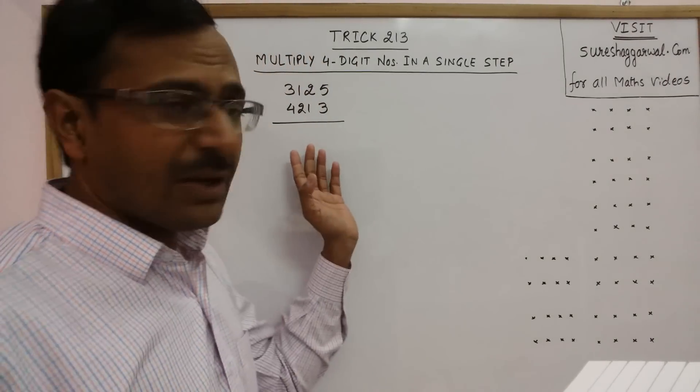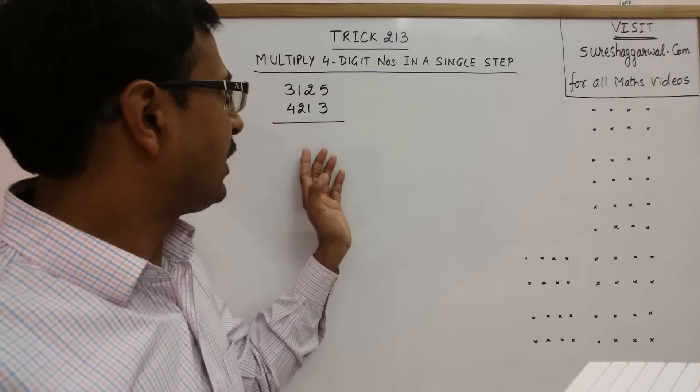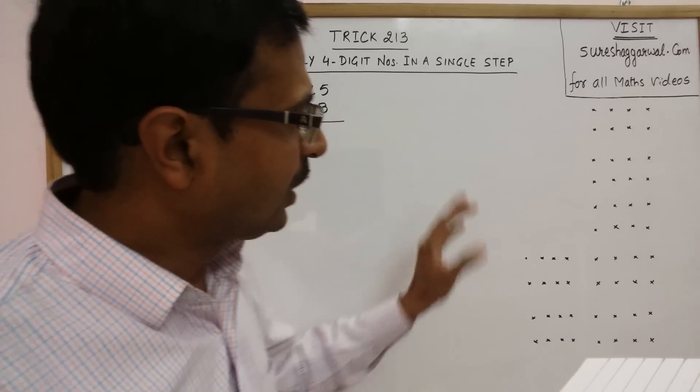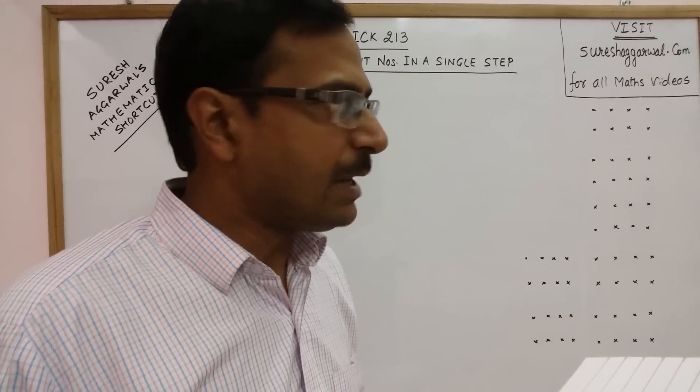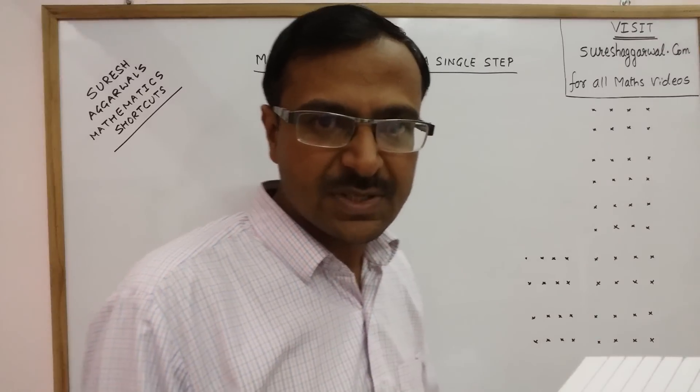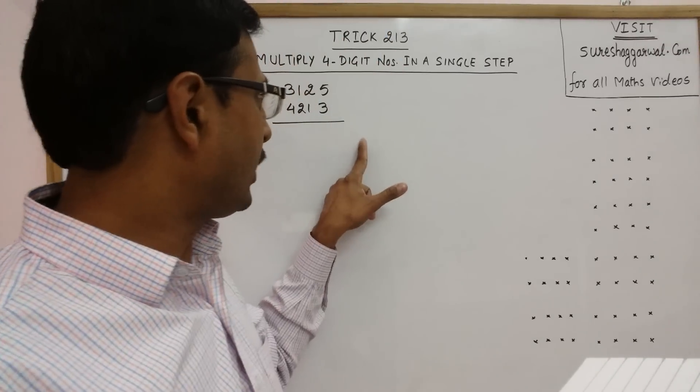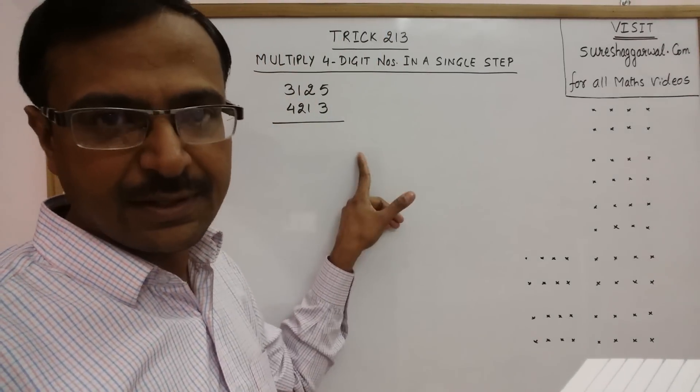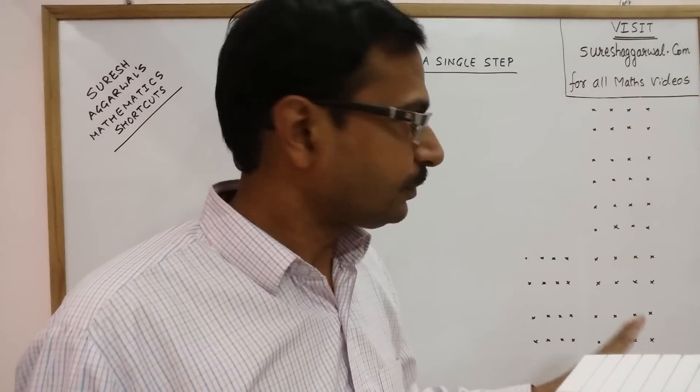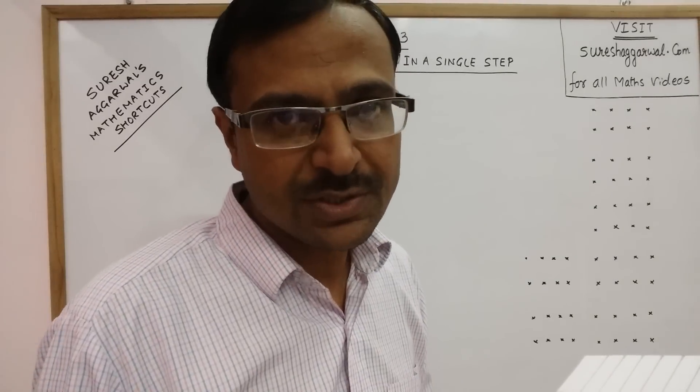Now see, I have taken one example wherein I have to multiply 3,125 and 4,213 in a single step. Whenever you have to multiply numbers in a single step, you need to understand the steps, the order in which we have to write the answer here. This step involves 7 basic addition calculations.